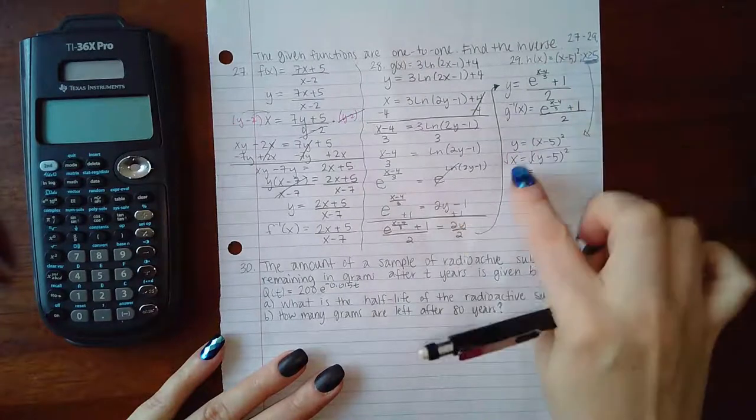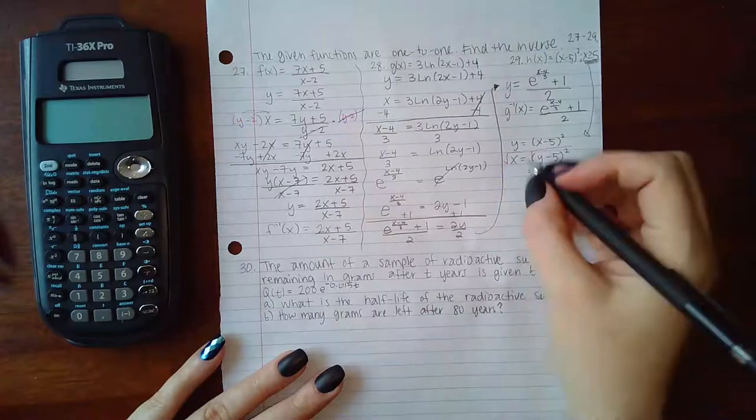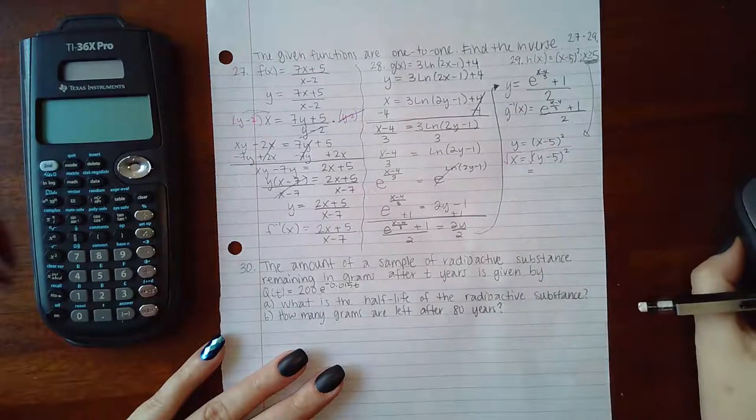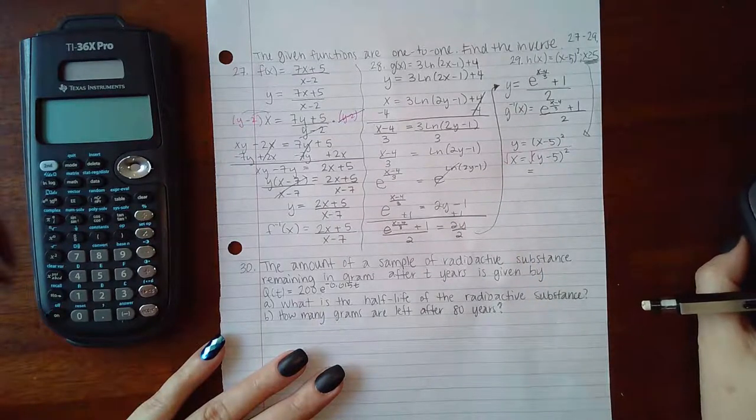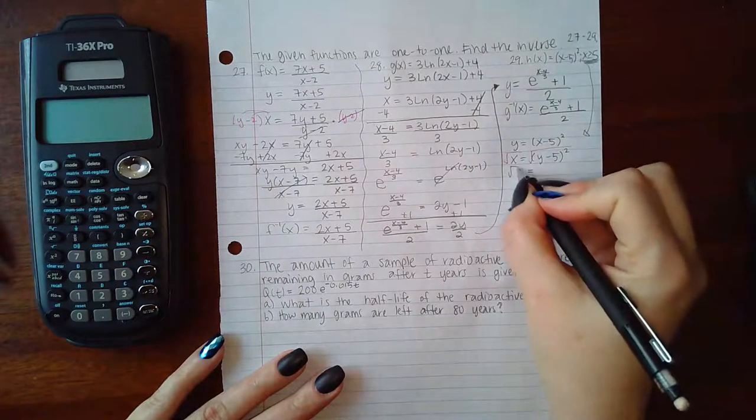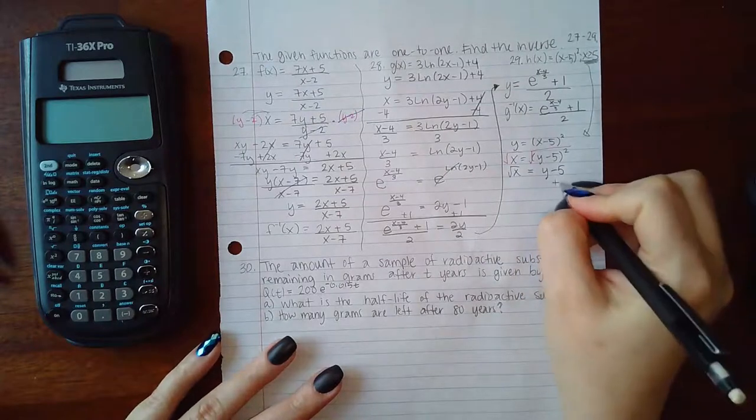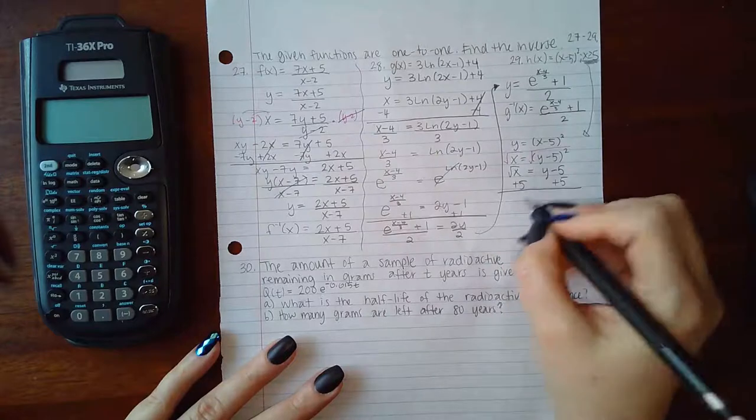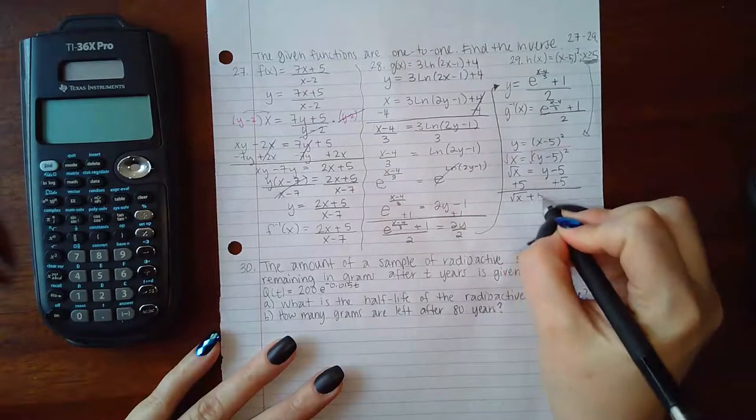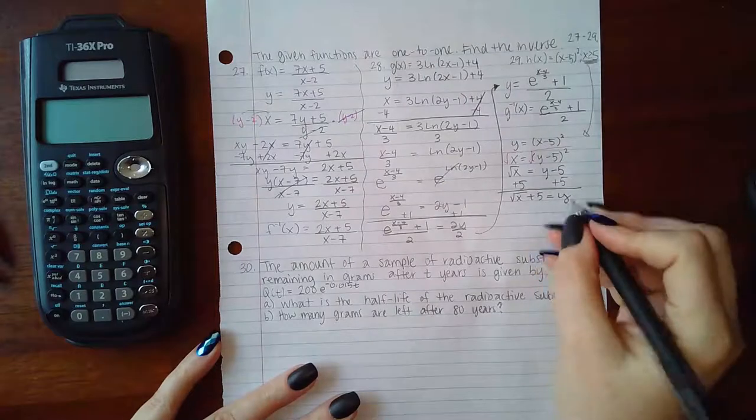So take the square root, and because you're only dealing with values that are greater than 5, that means positive, so you should be taking only the positive square root here. So we have the square root of x equals y minus 5, and then I'm going to add 5 to both sides.